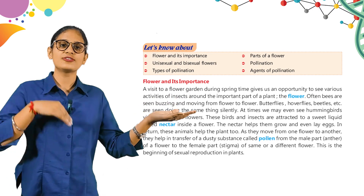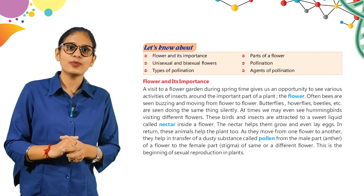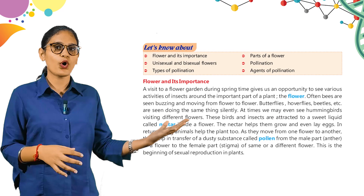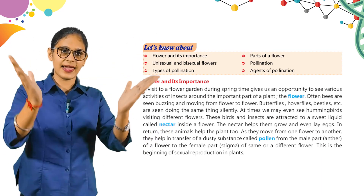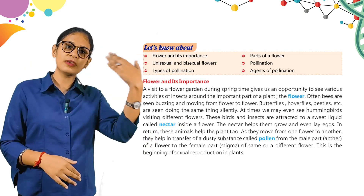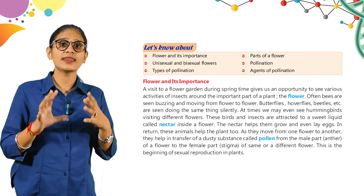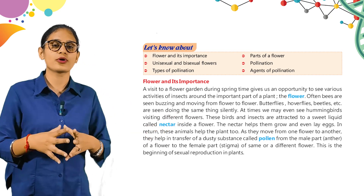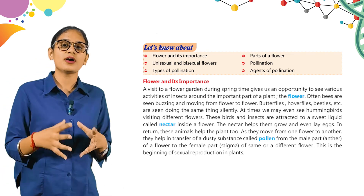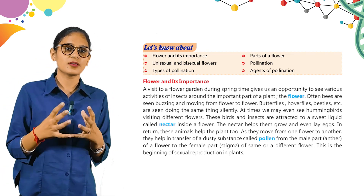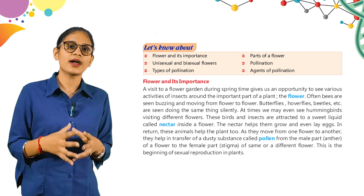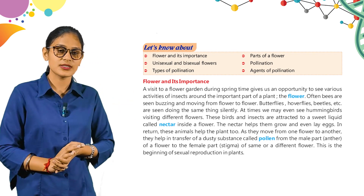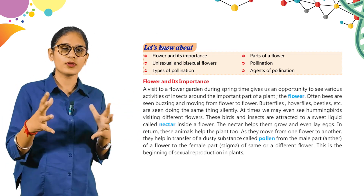As they move from one flower to another, they help in the transfer of a dusty substance called pollen from the male part, the anther of a flower, to the female part, the stigma of the same or a different flower. This is the beginning of sexual reproduction in plants. When we go to a flower garden, we can see many flowers and many insects moving among those flowers.